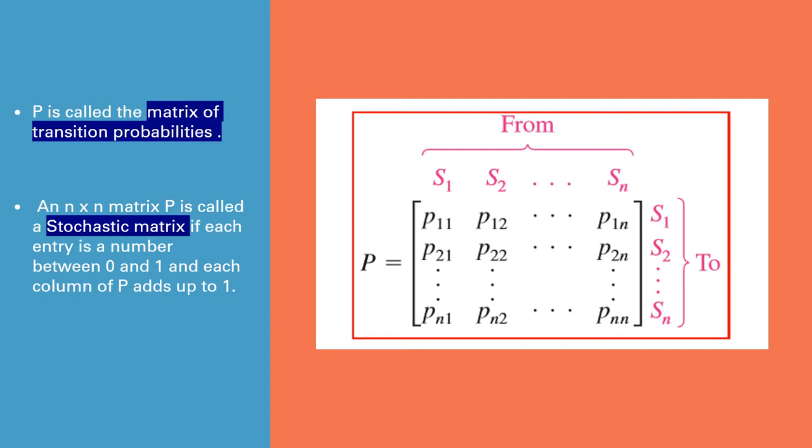Each entry of this will lie between 0 and 1, and the total probability adds up to 1. S1, S2, S3, etc., Sn denotes the different state of the population.